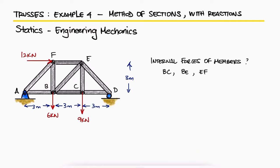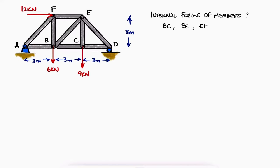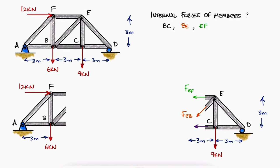Since we're not looking to find the internal forces of all members, the method of sections makes more sense than the method of joints, especially because in this case, the three internal forces we're looking for can be found with only one cut.